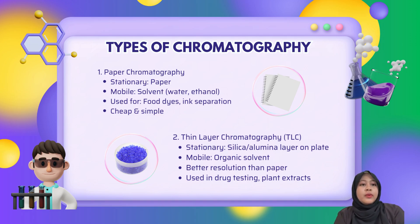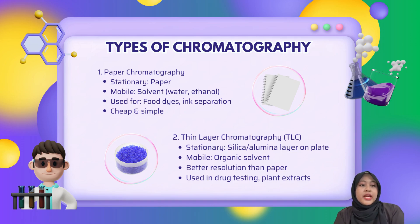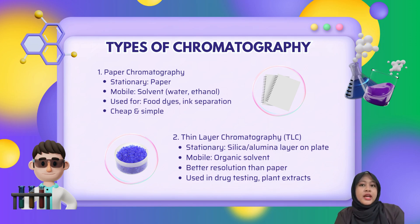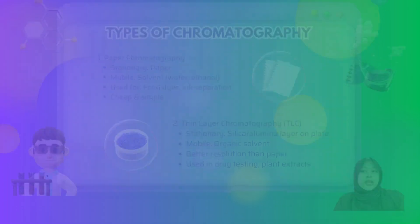The second one is thin layer chromatography, or TLC. It uses a thin layer of silica or alumina on a glass or plastic plate as the stationary phase and an organic solvent as the mobile phase. TLC gives more accurate results and is often used in labs, especially for things like drug analysis or plant compound testing.